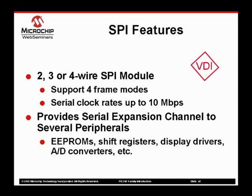The SPI module supports four framing modes based around the synchronization pulse. The framing modes are very useful in systems involving audio data. Serial clock rates of up to 10 megabits per second are supported by the SPI peripheral. The SPI port can be used to communicate with a number of different external peripherals, including EEPROMs, shift registers, display drivers, and A-to-D converters.